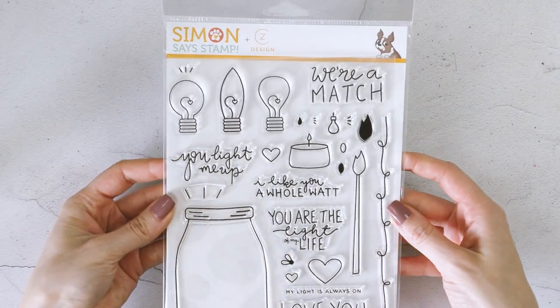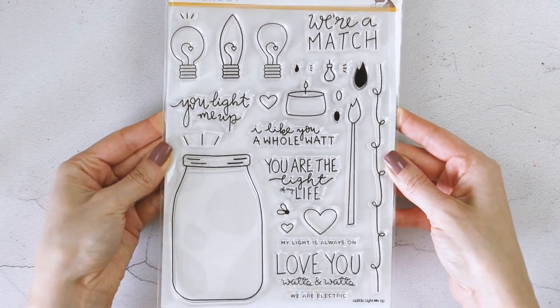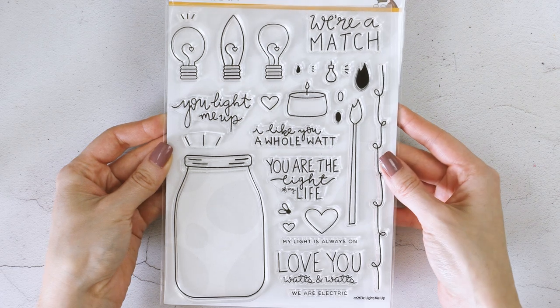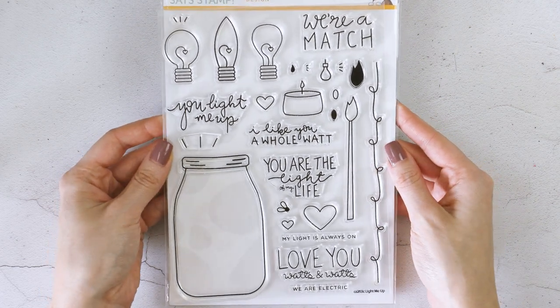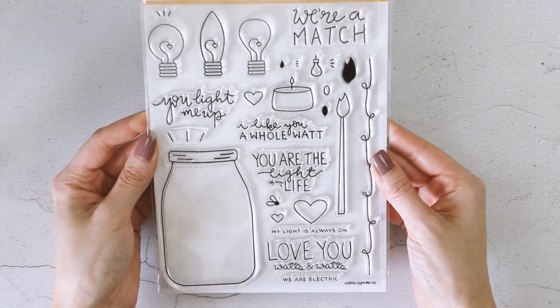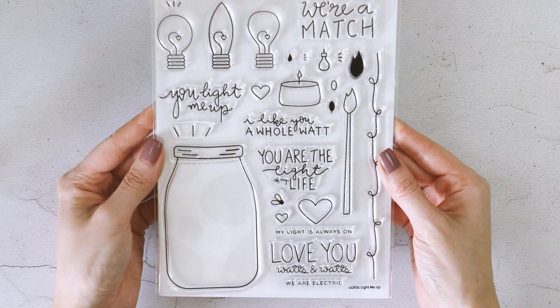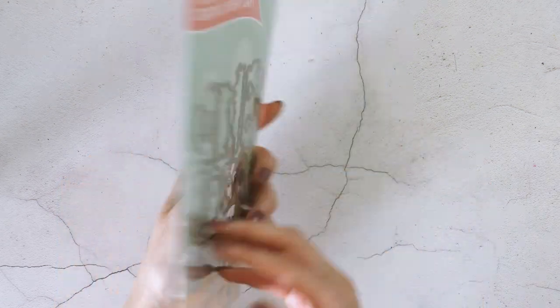The star of the show for today's project is this awesome Light Me Up stamp set from Kathy Zilski for simonsaysstamp. This stamp set has loads of wordplay sentiments such as you light me up, you are the light of my life, love you watts and watts, my light is always on, we are electric, and more.